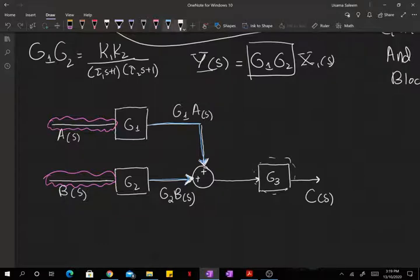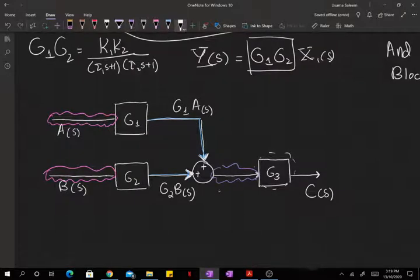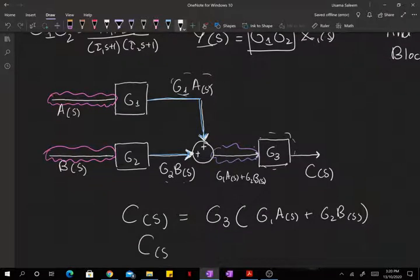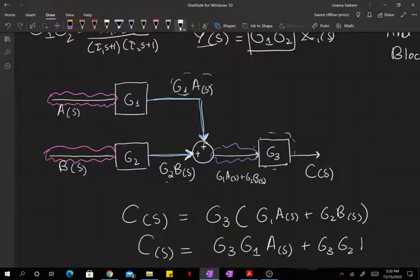And now both of these variables are being added together. So this line right here, what's that going to be? That's just going to be g1 a of s plus g2 b of s. Just addition, just adding these two. And finally, c of s is going to be equal to g3 times g1 a of s plus g2 b of s. And once I expand it out, I can write g3 and g1 combined into a single transfer function, and g3 and g2 combined into another transfer function.